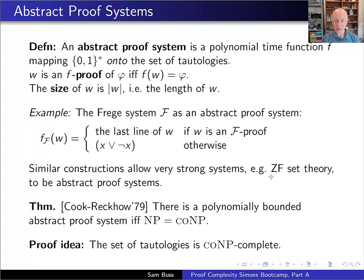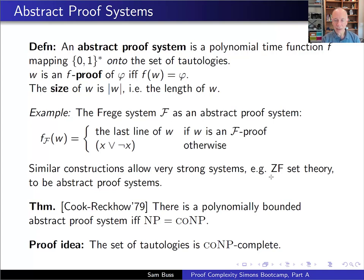A key observation due to Cook and Reckhow is that there's a polynomially bounded abstract proof system if and only if NP equals co-NP. The proof idea is based on the fact that the set of tautologies is co-NP-complete. If NP equals co-NP, accepting computations of a nondeterministic polynomial-time Turing machine can serve as proofs. Conversely, short proofs serve as witnesses of membership in the co-NP-complete set of tautologies.